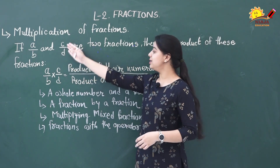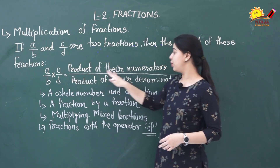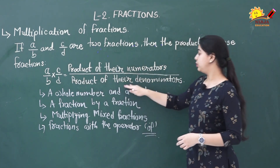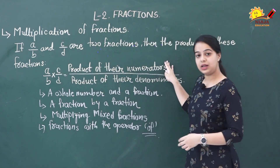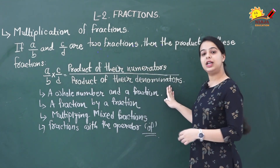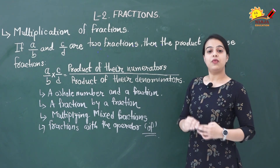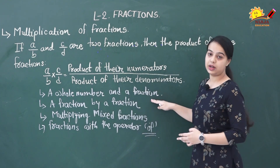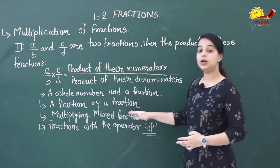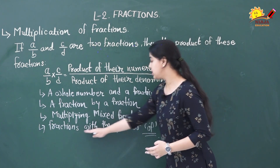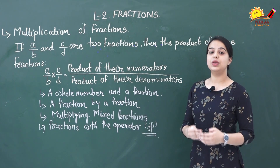If a/b and c/d are 2 fractions, then the product of a/b multiplied by c/d is equal to the product of their numerators upon the product of their denominators. That means to multiply any fractions, we do multiplication of numerators and multiplication of denominators. Now let us see the types of multiplication we will cover: multiplying a whole number and a fraction, multiplying a fraction with a fraction, multiplying mixed fractions, and fractions with the operator 'of'.